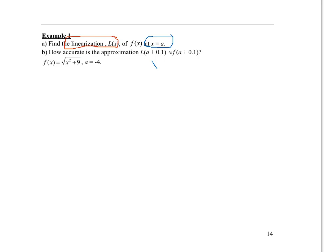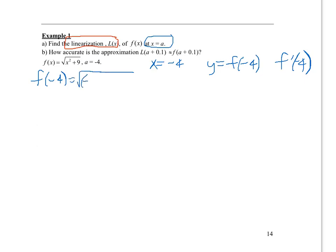We need three things: an x value, a y value, and the derivative value. So if x equals negative 4, our y value is going to equal f of negative 4. We also need f prime of negative 4 in order to write the tangent line equation. You can find f of negative 4 simply by plugging in negative 4 into the equation: negative 4 squared is positive 16, plus 9 is 25, and the square root of 25 is 5.